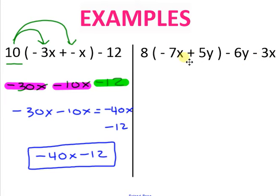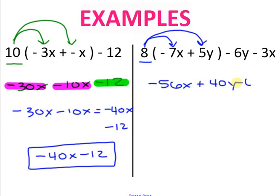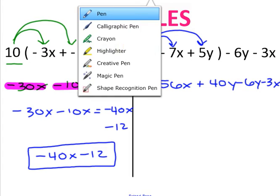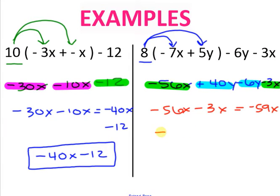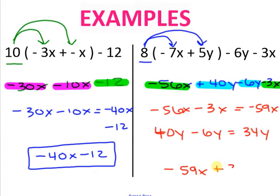Find your parentheses — right here — and your term outside — right here. Distribute: 8 times negative 7x is negative 56x, and 8 times positive 5y is positive 40y. Bring down the rest: minus 6y minus 3x. Finding like terms: negative 56x minus 3x is negative 59x, and positive 40y minus 6y is 34y. In alphabetical order, the final answer is negative 59x plus 34y.